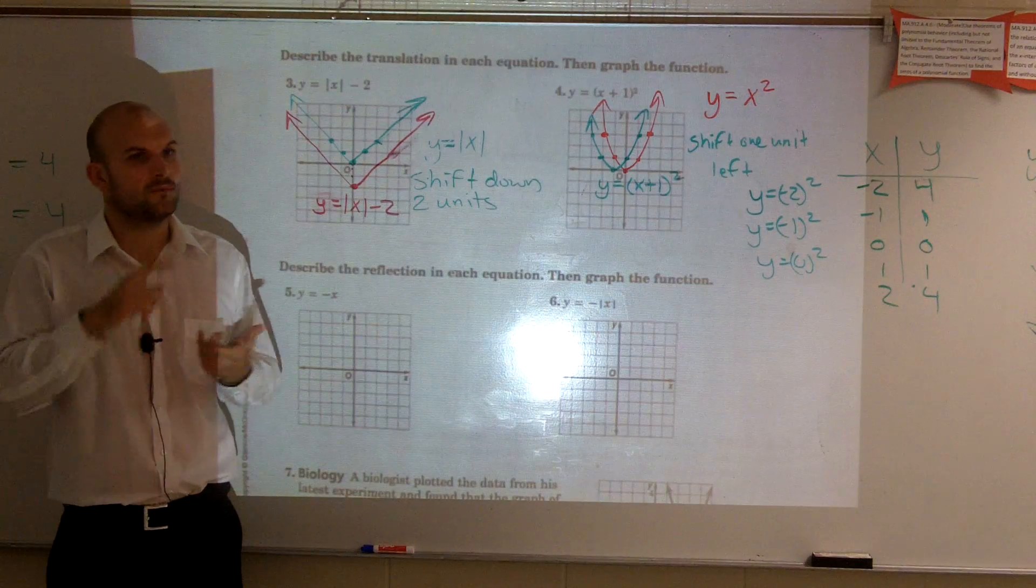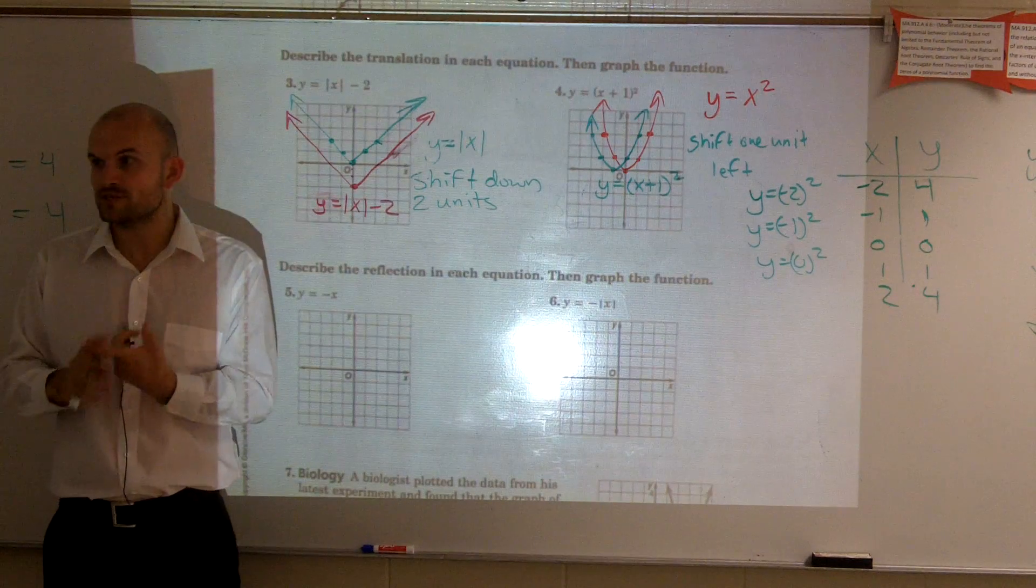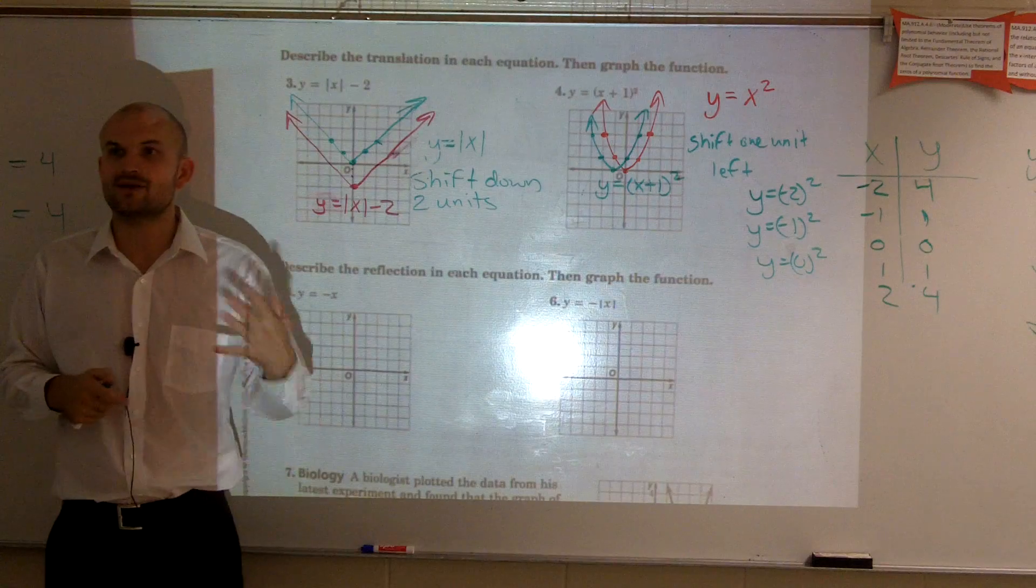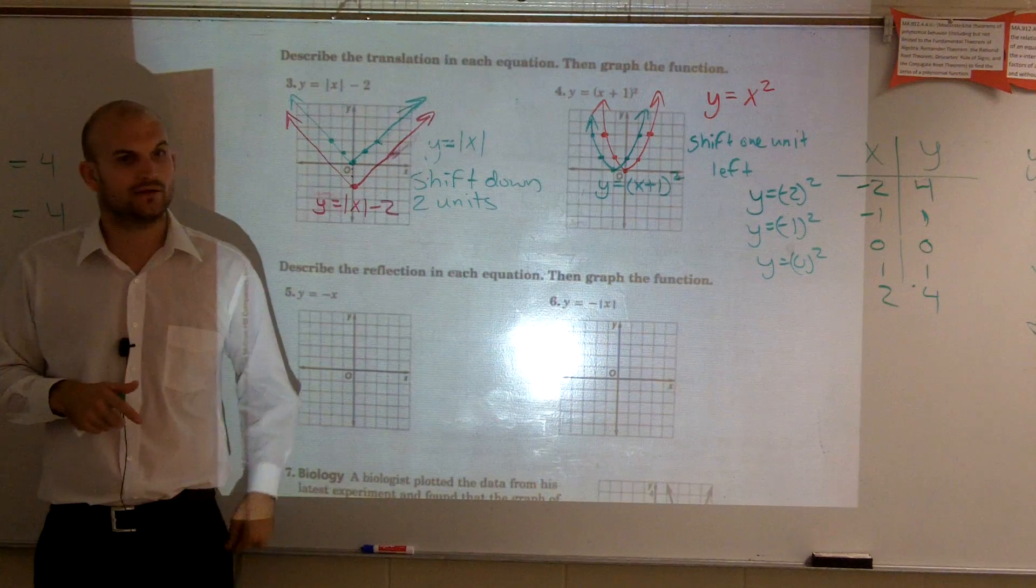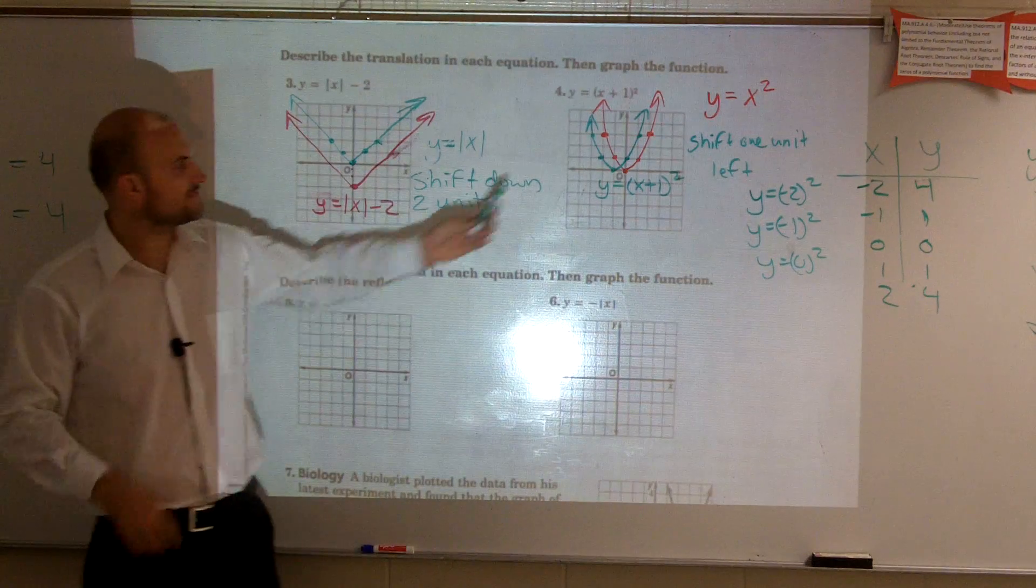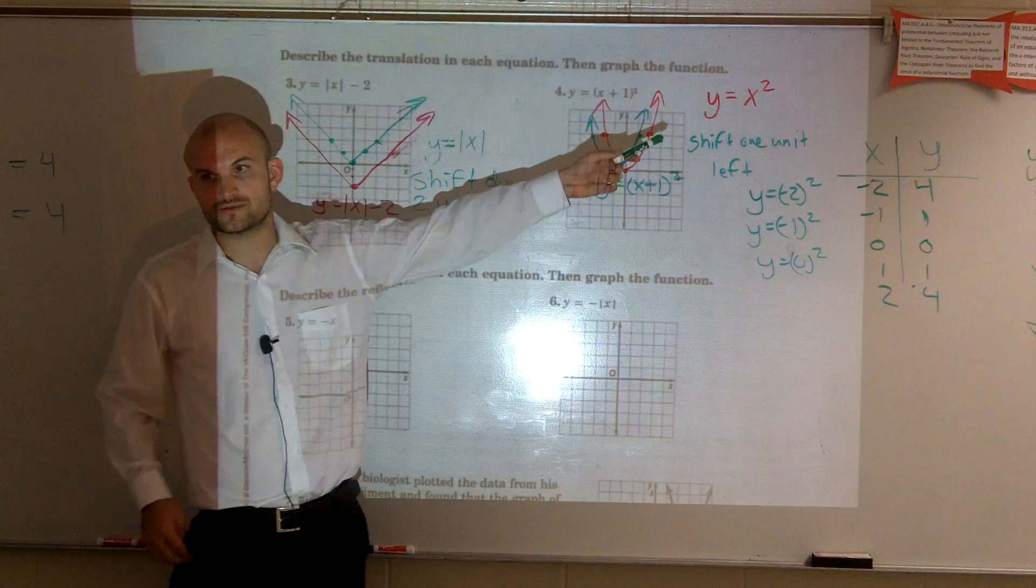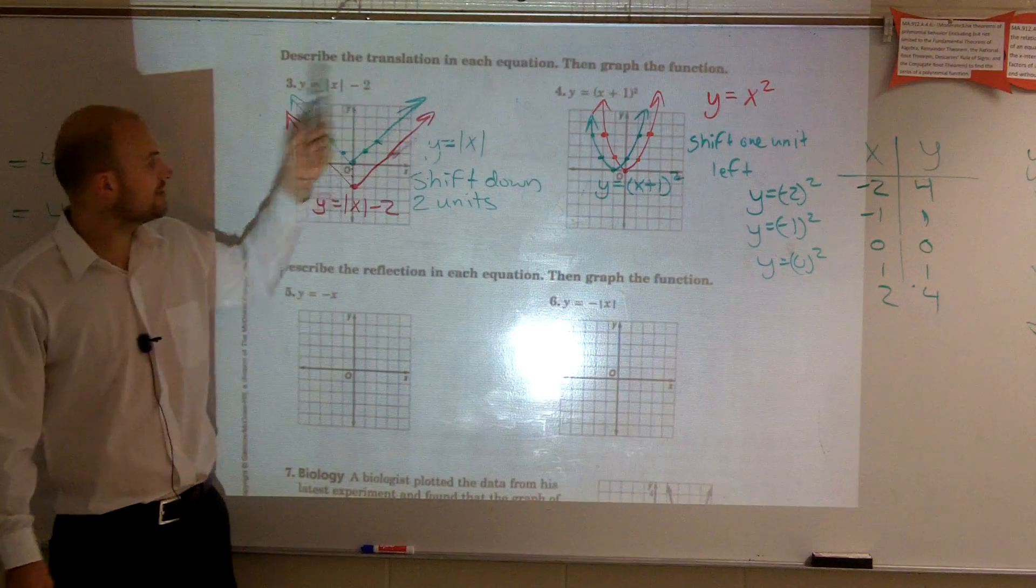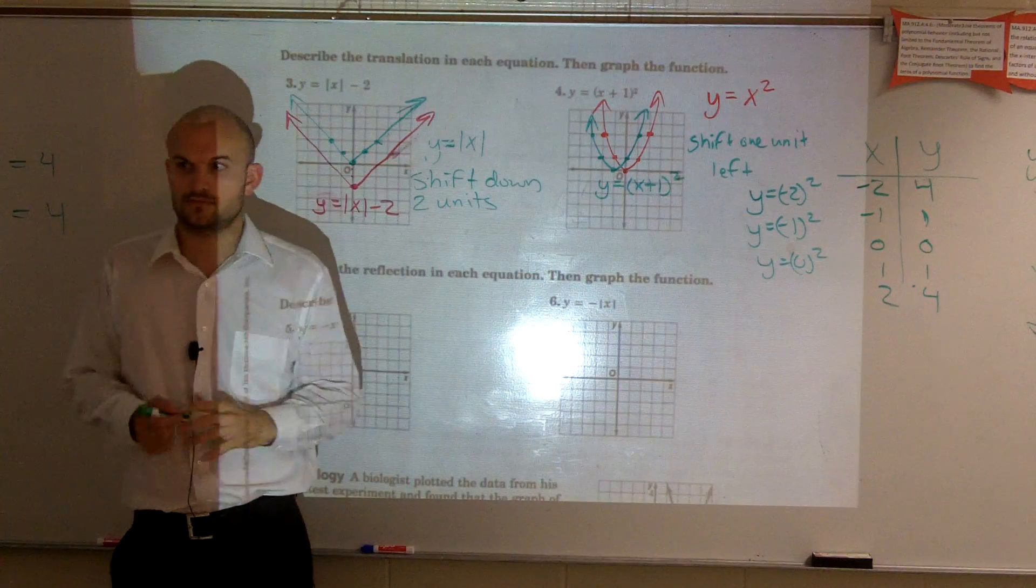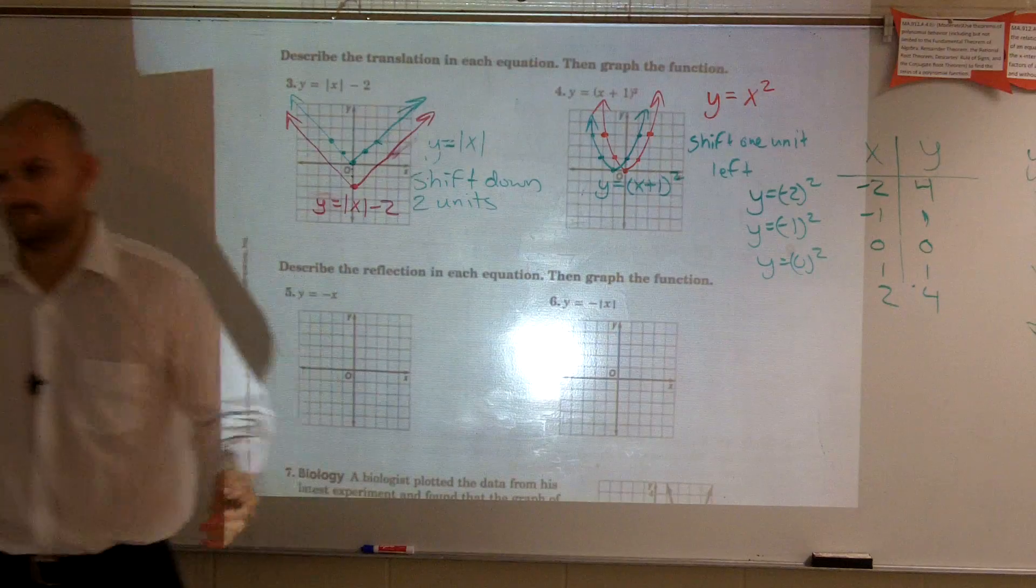You guys got to determine what the parent graph is, and then where's the transformation. Is it inside, or is it outside? The parent graph is always going to be this one. It's y equals x squared. For this one, it was absolute value of x.